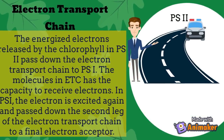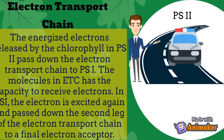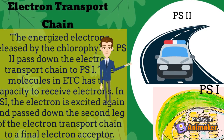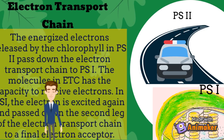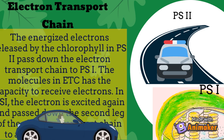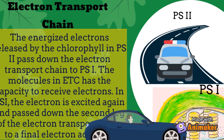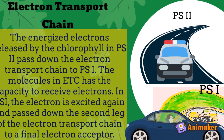The energized electrons released by chlorophyll in PS2 pass down the electron transport chain to PS1. The molecules there have the capacity to receive electrons, but there is a loss of energy along the way. In PS1, the electron is excited again and passes down the second leg of the electron transport chain to a final electron acceptor.